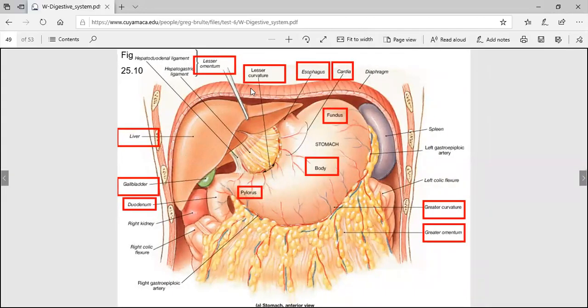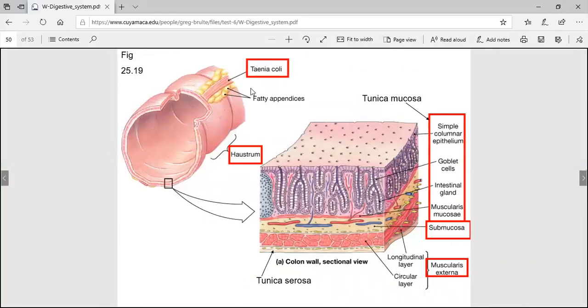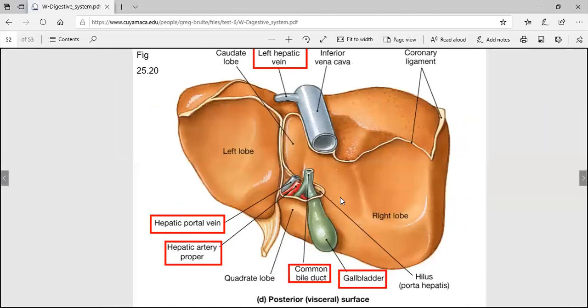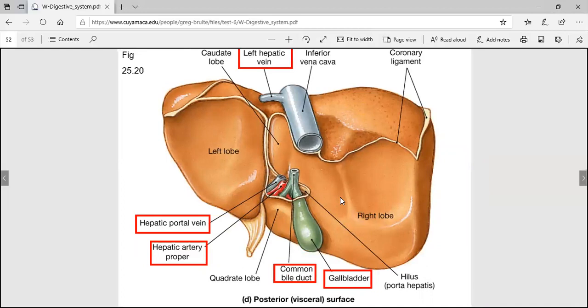Don't forget the lesser omentum, greater omentum. Here's a hint on the colon. If every other cell is a goblet cell, you're probably looking at colon. There's goblet cells in other parts like digestive and respiratory system, but in the colon it's a lot of goblet cells and they make mucus. If you see tons and tons of goblet cells under your microscope, you're probably looking at colon.